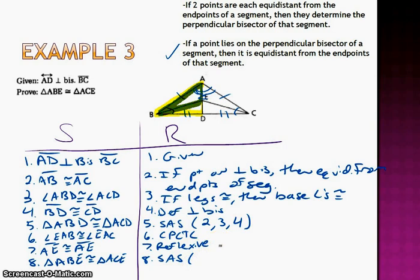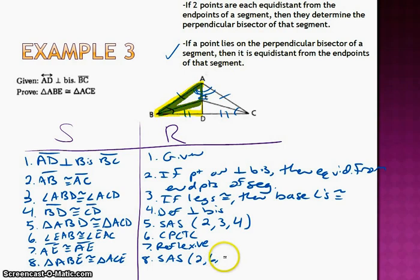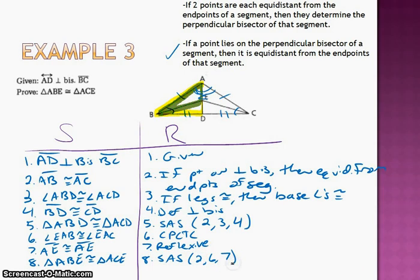I've got AB congruent from step two. I've got the angles I just talked about in six, and the sides by seven. So, that is all.